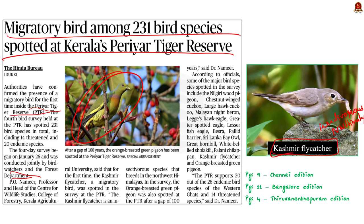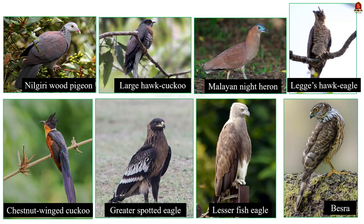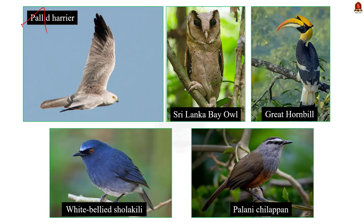Some of the major bird species spotted in the survey include the Nilgiri wood pigeon, chestnut-winged cuckoo, large hawk cuckoo, Malayan night heron, legis hawk eagle, greater spotted eagle, lesser fish eagle, besra, pallid harrier, Sri Lanka bay owl, great hornbill, white-bellied sholakili, and Palani chillapan. Nearly 14 threatened and 20 endemic species of birds were spotted in the bird survey. The Periyar Tiger Reserve supports 20 out of 26 endemic bird species of the western ghats.